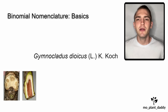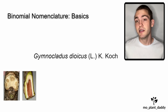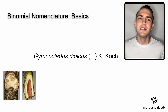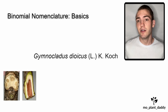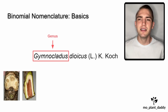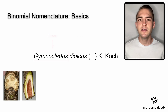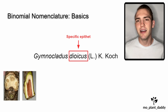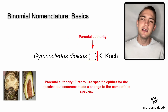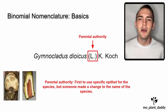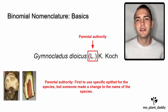Now, what if someone made a revision to a species name? We can see an example of that here with Gymnocladus dioicus (L) K. Koch, or the Kentucky coffee tree. Let's spot our Latin binomial: Gymnocladus is our genus, and dioicus is our specific epithet. Now, what is that L in the parentheses? That is our parental authority, which marks who was the first to use that specific epithet for the species.